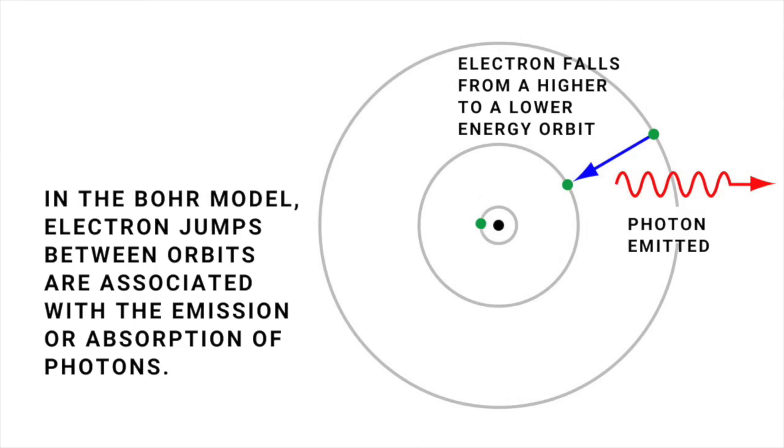For a given type of atom, say hydrogen, there's a limited number of stable orbits that an electron can occupy. Each of these orbits corresponds to a whole multiple of the basic quantum. As long as an electron is in one of these orbits, its energy, contrary to whatever classical physics might say, stays the same.